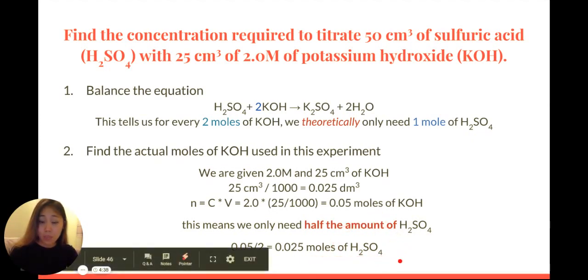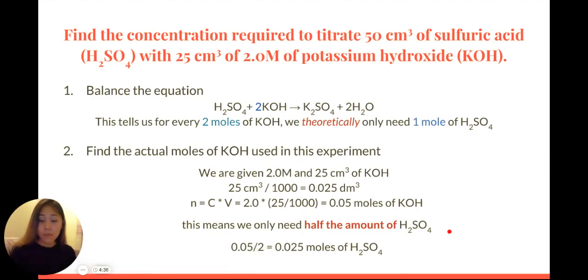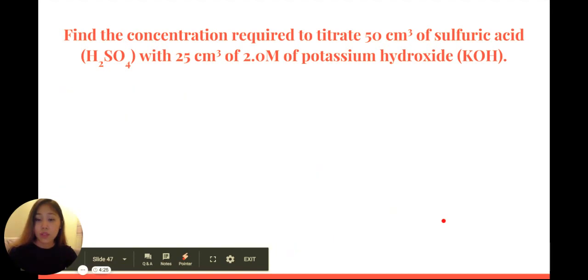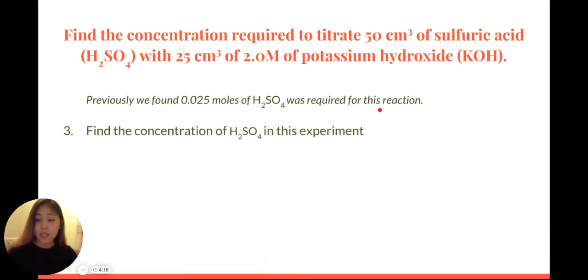So, by this point, we've already calculated the moles of sulfuric acid by looking at the ratio, the theoretical ratio, in our equation that we just balanced. Now, previously, we just solved that we needed 0.025 moles of sulfuric acid required. This next step is find the concentration of sulfuric acid in this experiment, so we can finally reach the final stage of figuring out the concentration.